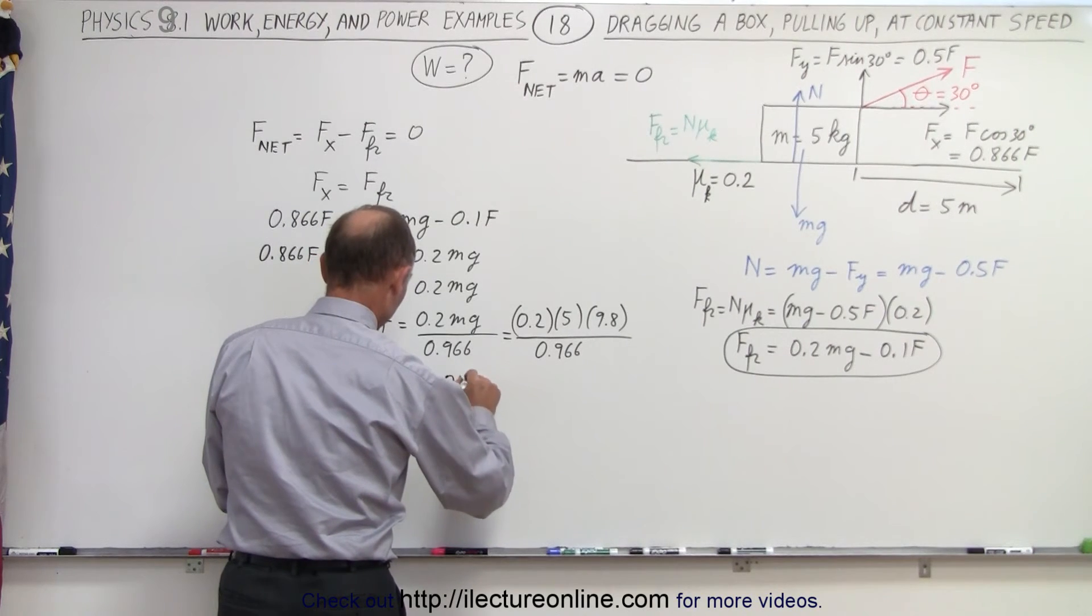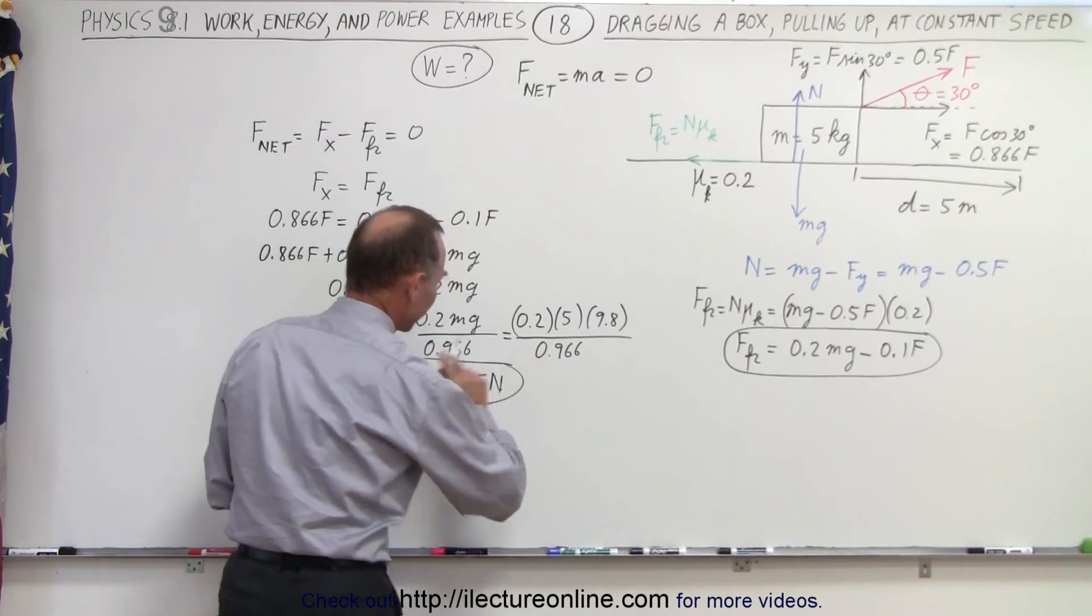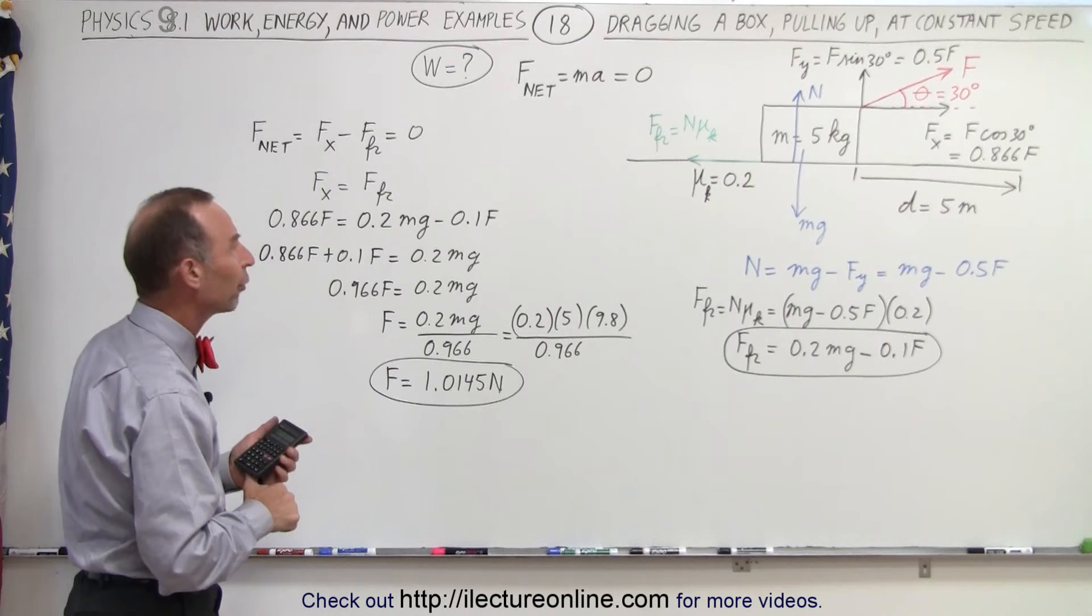Finally, the force f is equal to 0.2 times 5, which is 1, times 9.8 divided by 0.966, which equals 1.0145 newtons. I kept a few extra decimal places to avoid any roundoff error.